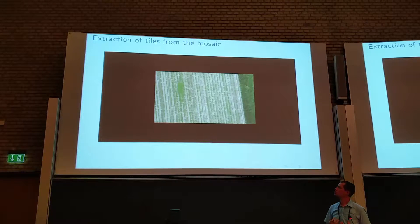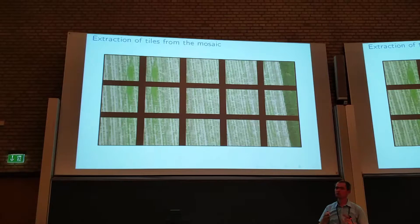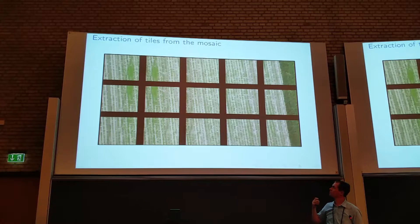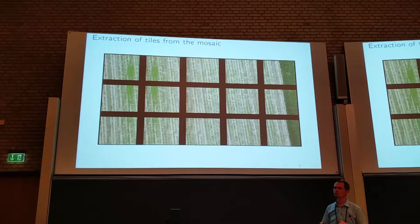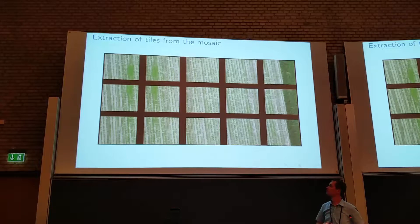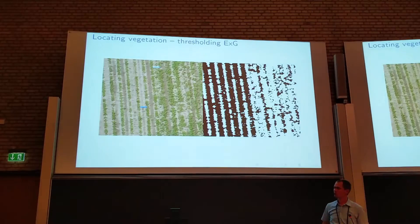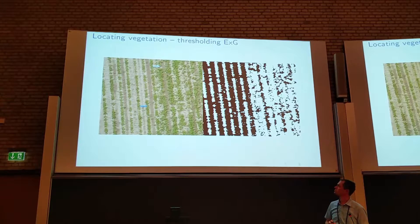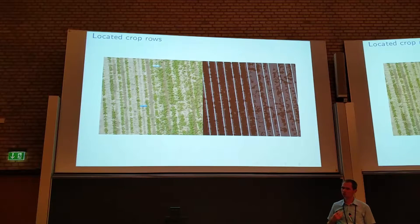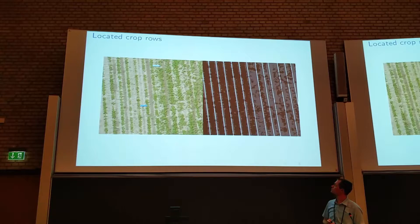Namely, to take the entire ortho mosaic and split it into smaller overlapping tiles, then analyze each tile one by one, with the assumption that the crop rows can be treated as consistent straight lines because they cannot deviate that much within a confined region. What we actually do is first locate vegetation in the image by calculating an excess green value and then threshold it — at least with these images it gives a nice segmentation. Then we try to locate crop rows in that image.